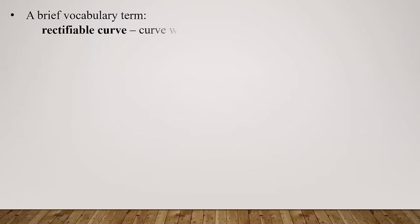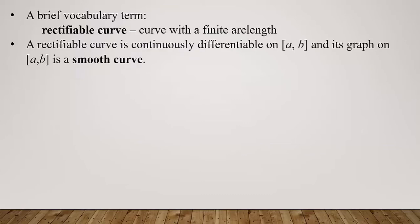Before continuing, one new vocabulary term: rectifiable curve. If you hear this in a future class, it's just a fancy way of saying it's a curve that has a finite arc length. In this derivation, remember that a rectifiable curve is continuously differentiable on the closed interval [a, b], and its graph on that interval is said to be a smooth curve.